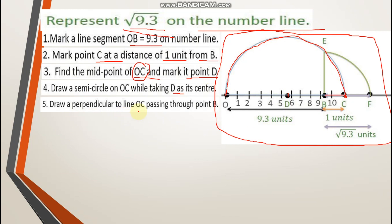Next step, draw a perpendicular line on OC passing through point B. Now at B you have to draw a perpendicular line. Basically you have to draw 90 degree angle here on point B. You need to draw 90 degree angle. The 90 degree angle line will cut your semicircle at one point.